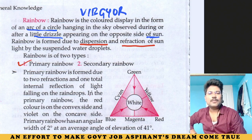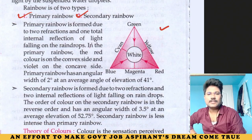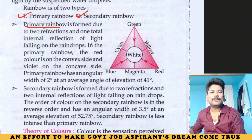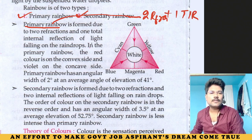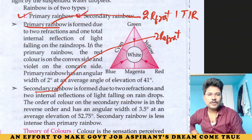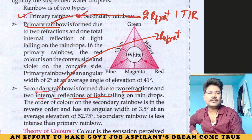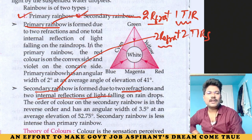There is a primary rainbow and a secondary rainbow. Primary rainbow involves two refractions plus one total internal reflection (TIR). Secondary rainbow involves two refractions plus two internal reflections of light — two TIRs.